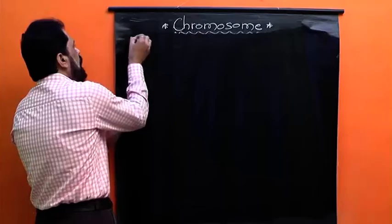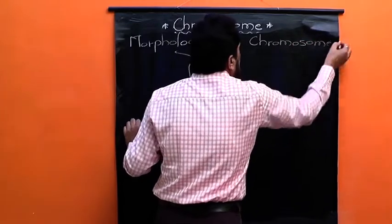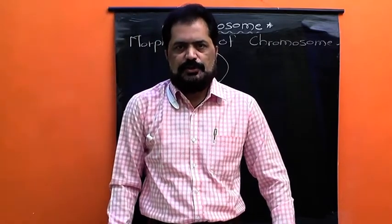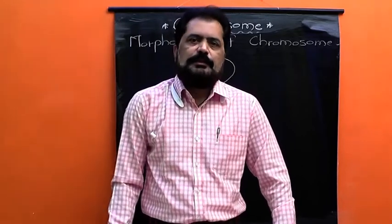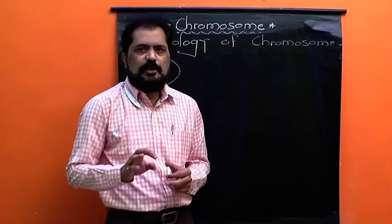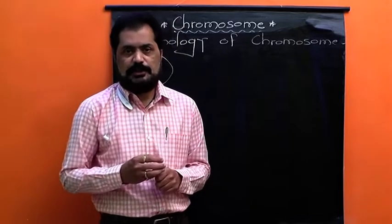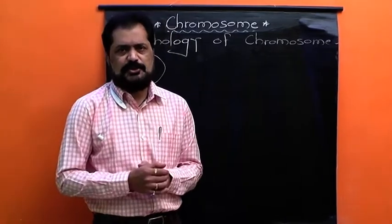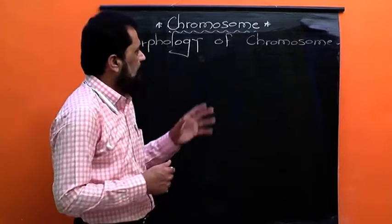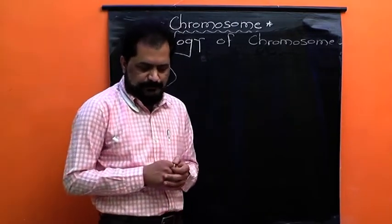Now we need to study the morphology of chromosome — that is, its shape, size, number, and structure. The morphology of chromosomes can be best studied in metaphase or anaphase, because during cell division the chromosomes undergo condensation and appear as very distinct structures.